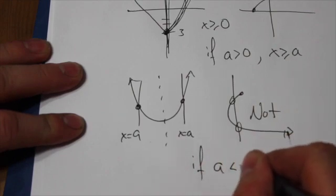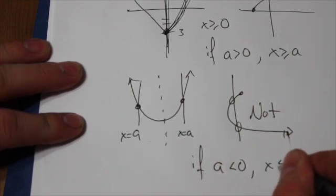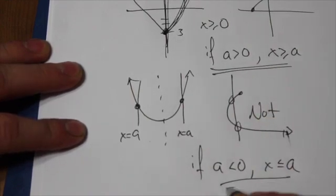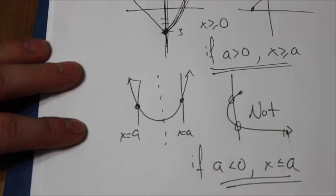So if a is now less than zero, I need to restrict my x value to values less than or equal to a. So it's these pieces right here together that make up the full domain.